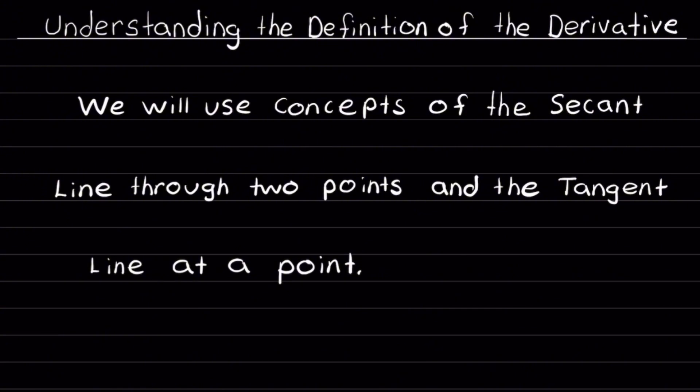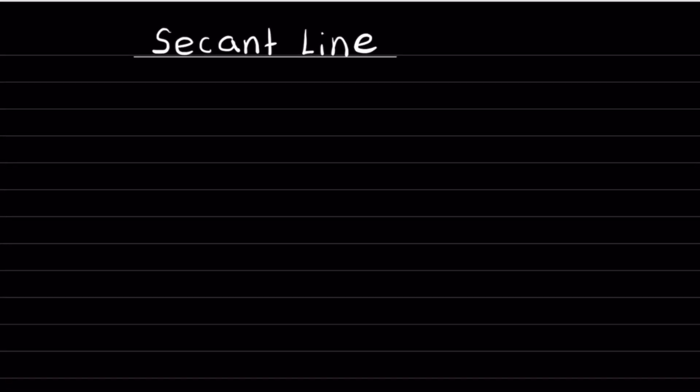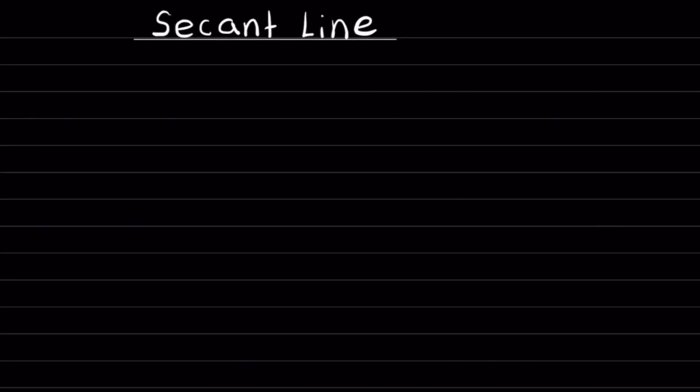Now, let's get into the understanding of how the definition of the derivative works. We will use concepts of the secant line through two points and the tangent line at a point. A secant line is a line joining two points, and its slope is equal to the average rate of change between those points.